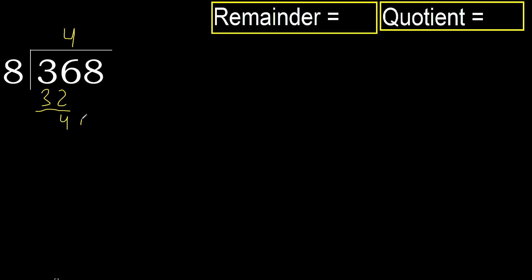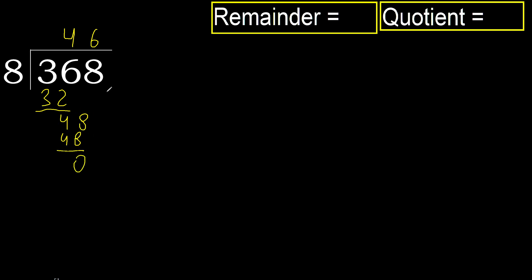Next, bring down 8 to get 48. 8 multiplied by 6 is 48 — ok, not greater. Subtract.